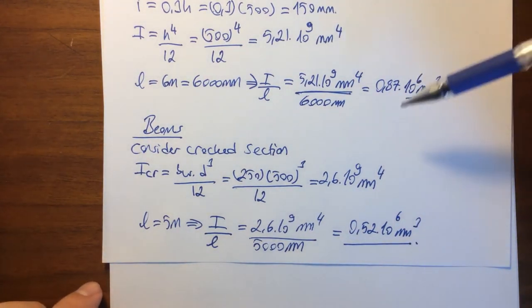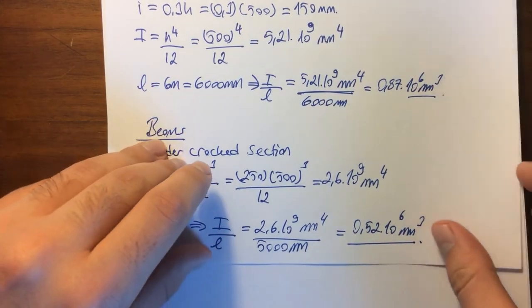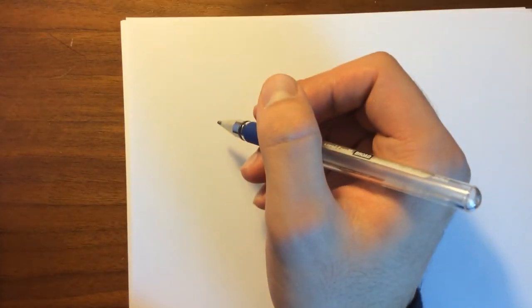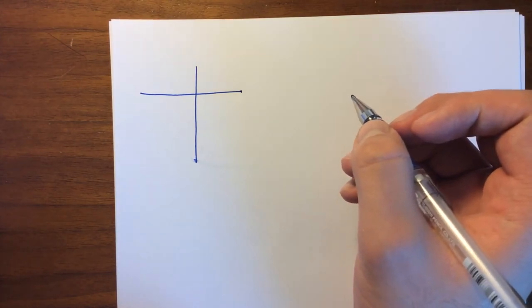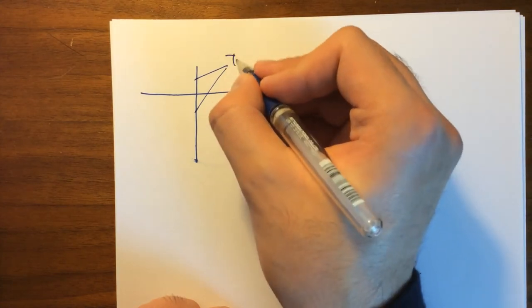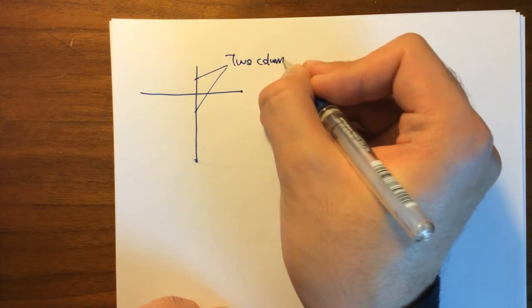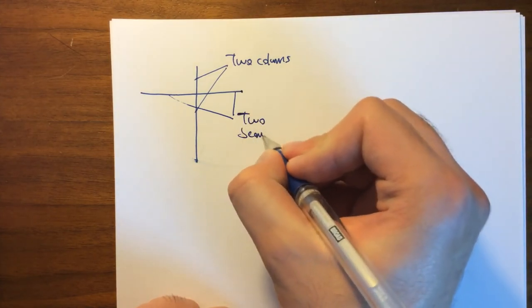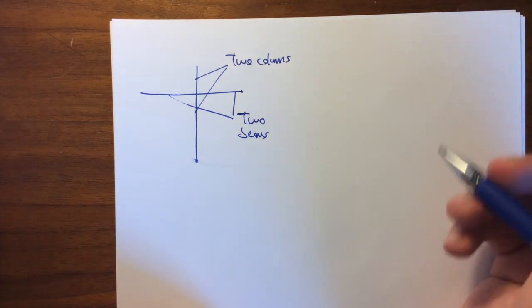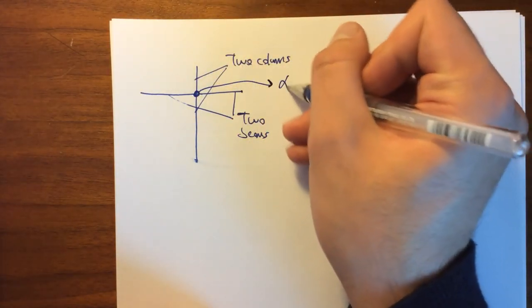Let's draw a simplified figure for the beams and the columns. This is basically our structure right now. These two are the two columns and this is the two beams that we are considering.